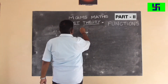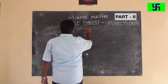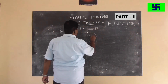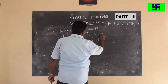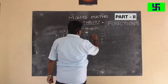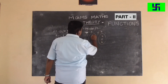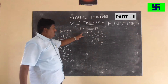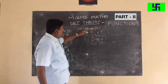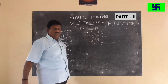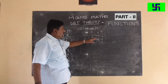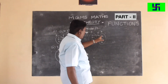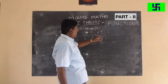For a one-one function: set A has elements 1, 2, 3 and set B has 4, 5, 6. One maps to 5, two maps to 6, three maps to 9. The function from A to B is called a one-to-one function if each element of A has only one image in B — each element is mapped with only one unique image.